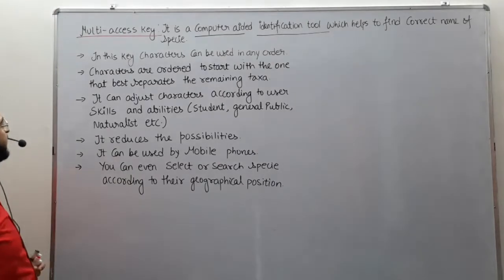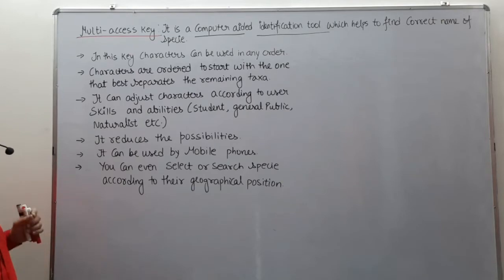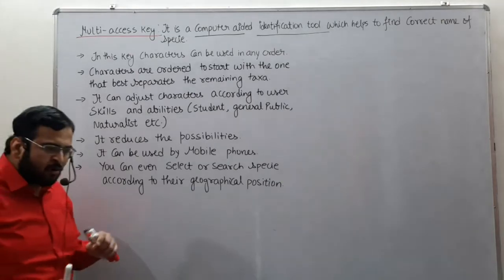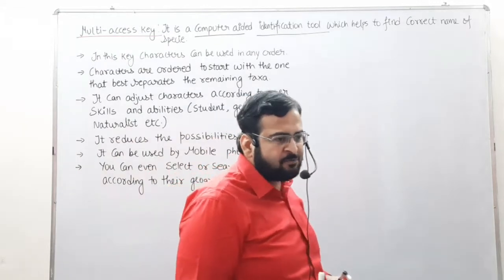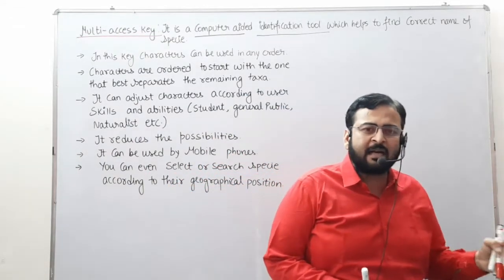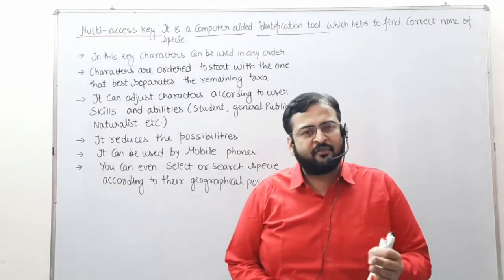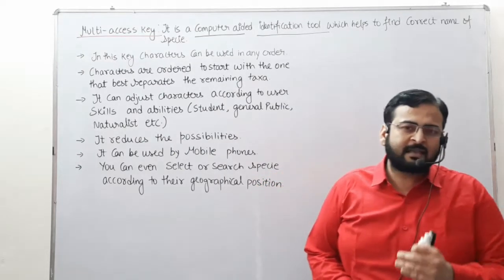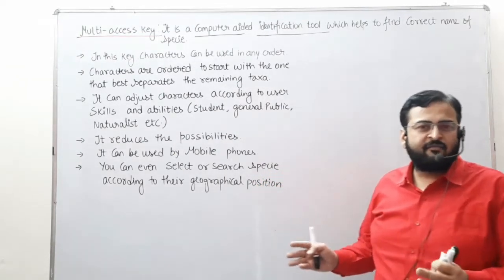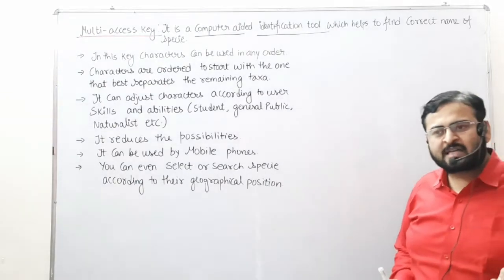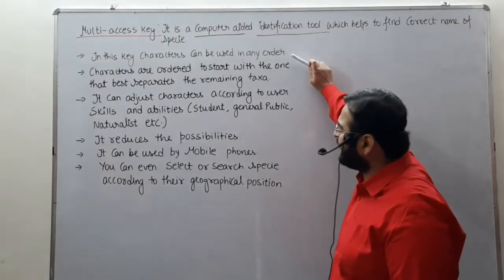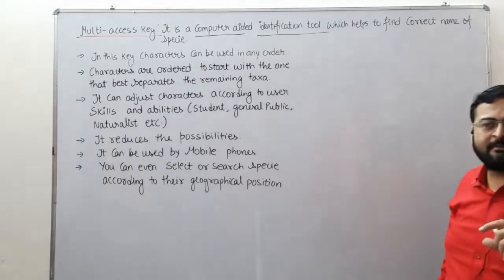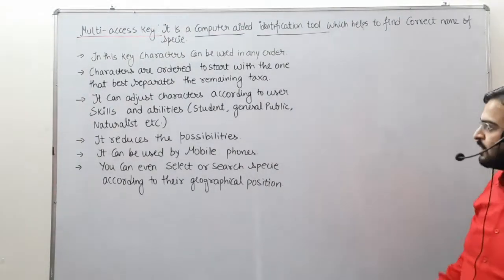Let us learn about the multi-access key. The characters within this key can be used in any order. If you want to first check color, or weight, or length, or width of a species, or any other character — you can check any character in any order you prefer.